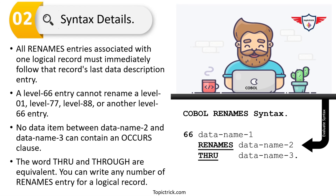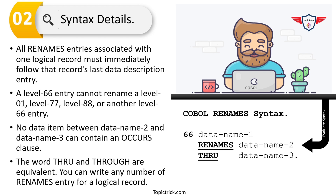The COBOL rename syntax is fairly simple and easy to understand. The syntax begins with a level number — for the rename clause the level number must be 66 — then you have data-name-1, followed by the RENAMES keyword, then data-name-2 THROUGH data-name-3.